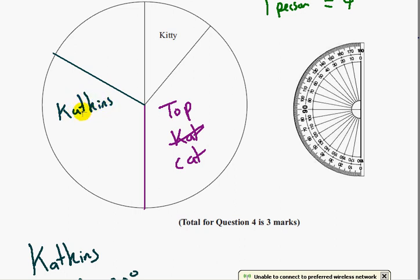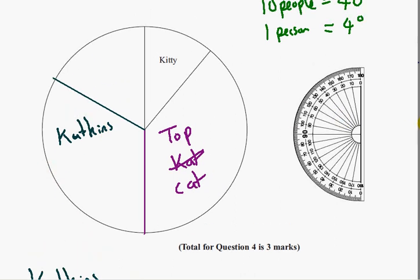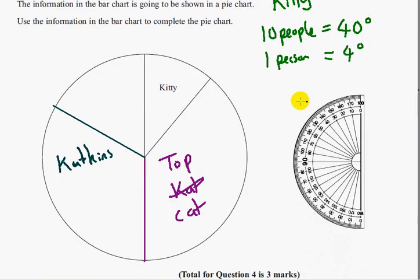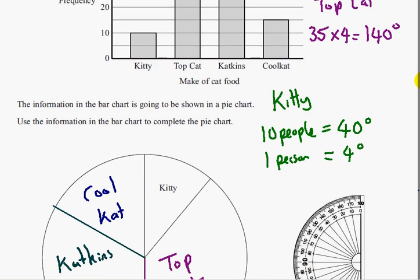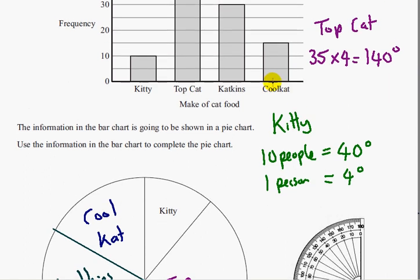And the last section is going to belong to cool cat. So cool cat. Is that spelled with a K? Let me just check. Yes, it is this time. So just to finish it off, cool cat has 15 people. Each person has 4 degrees. So 4 times 15 is 60 degrees.